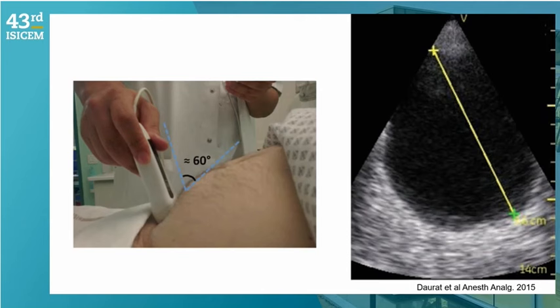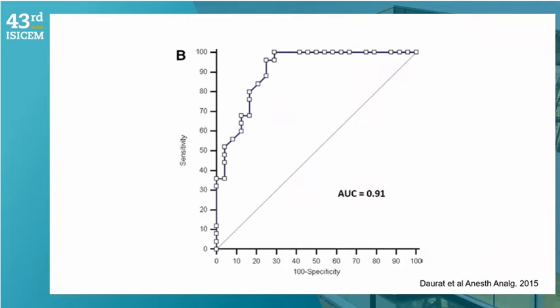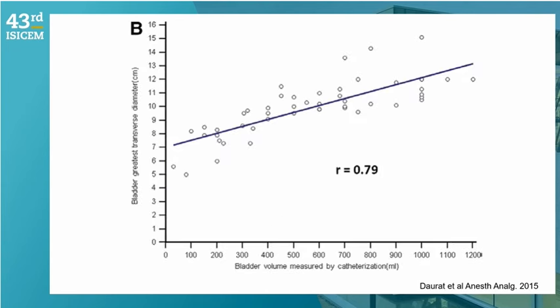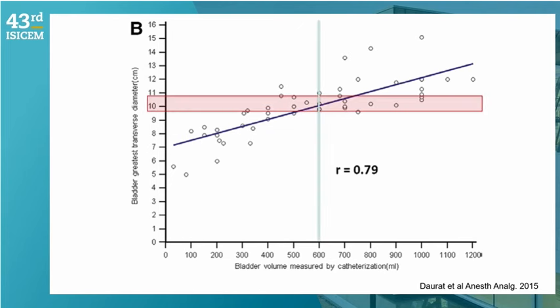For the urinary tract, you can insonate the bladder in short and long axes to look for bladder overdistension. Placing the probe just above the pelvis at a 60-degree angle, you measure the greatest transverse diameter. This diameter accurately predicts bladder overdistension — the correlation between bladder volume assessed by catheterization and the greatest transverse diameter is good, and when the diameter exceeds 9 centimeters, volume is higher than 600 ml, indicating bladder overdistension.